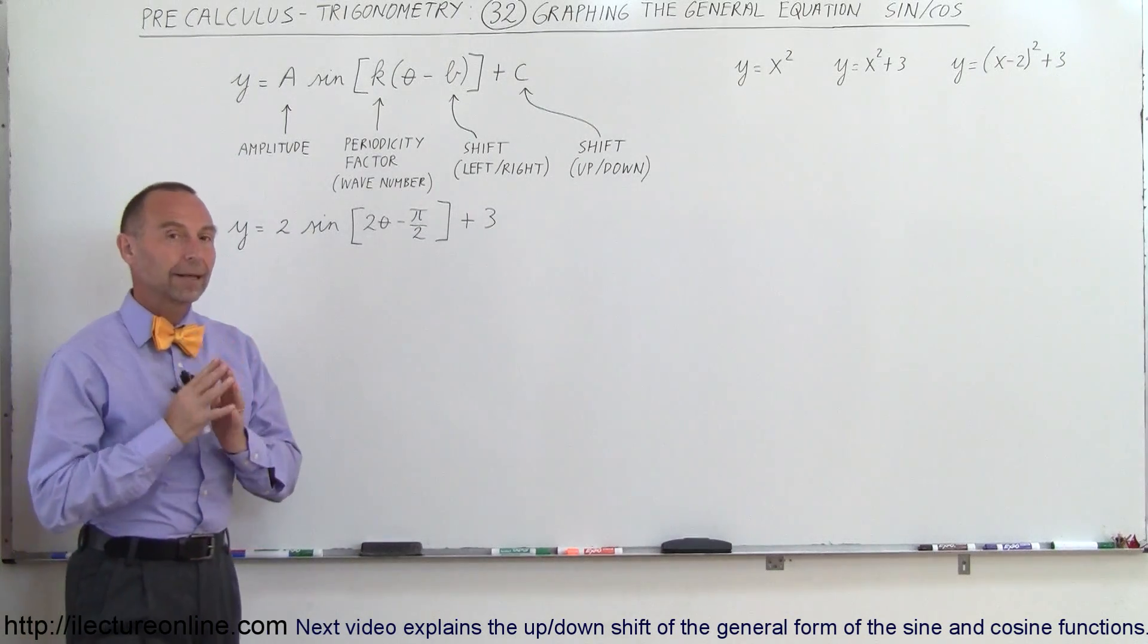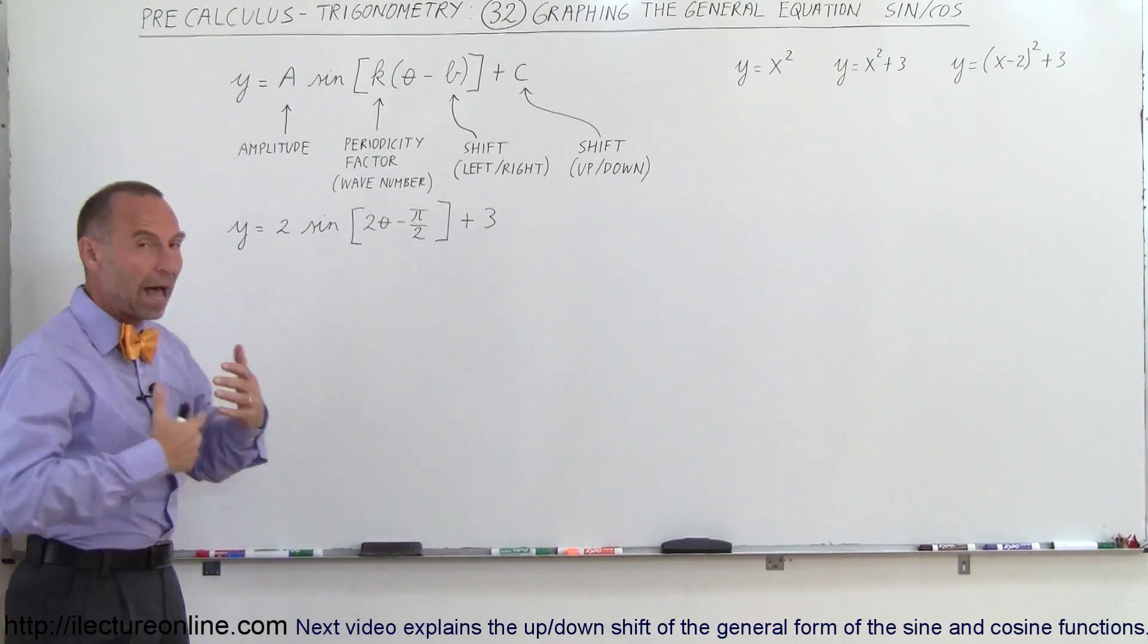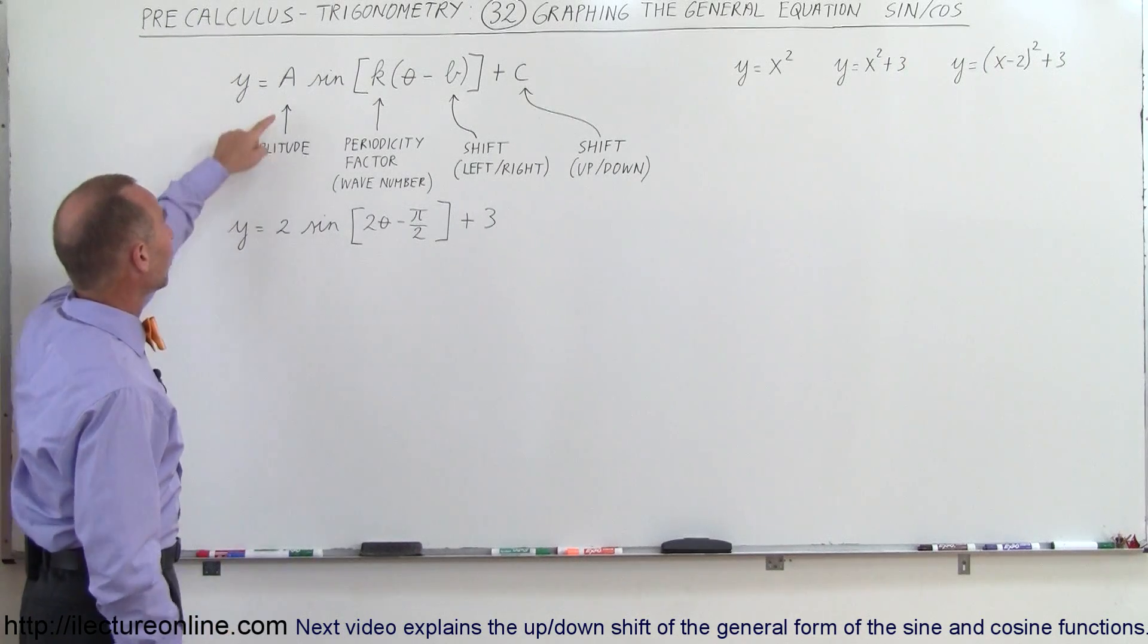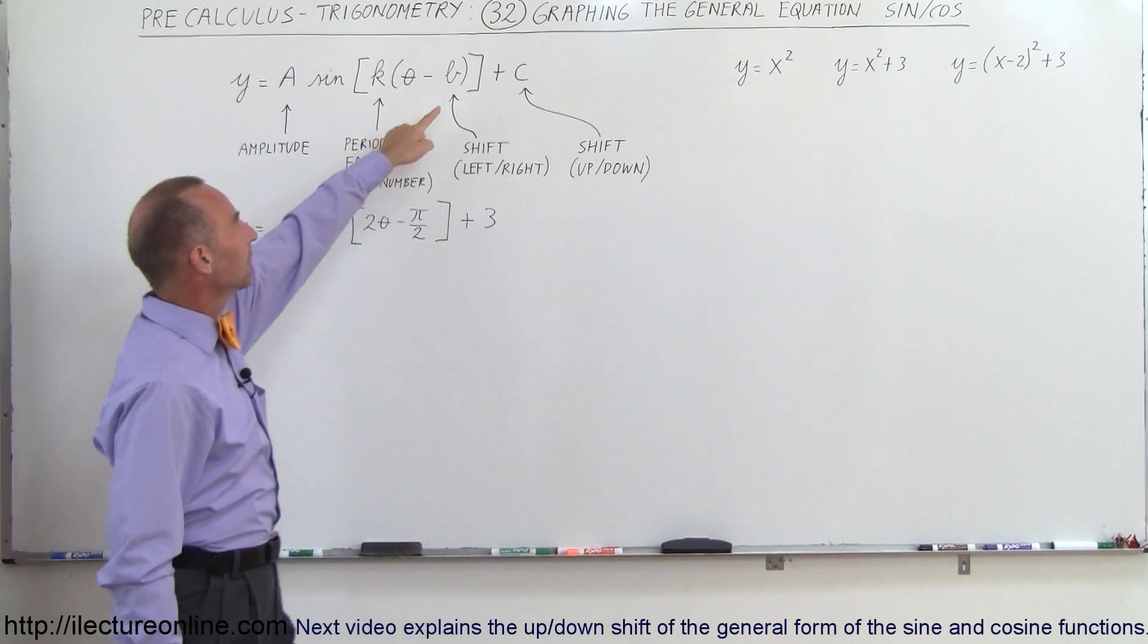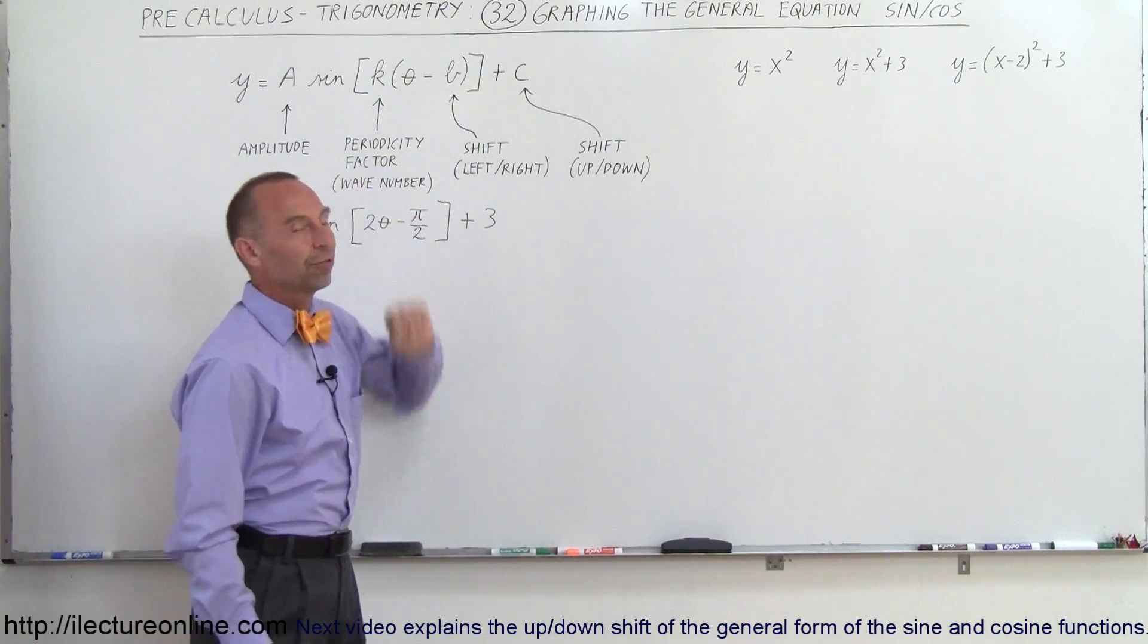Now the four constants that determine how the function is graphed are as follows: the amplitude, the periodicity factor, the shift left or right, and the shift up or down.